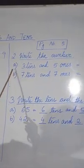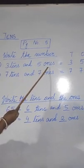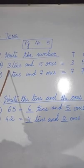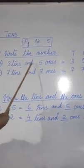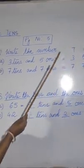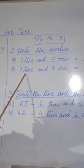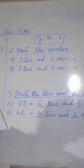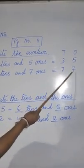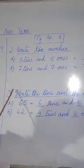Now look at question number a. 3 tens and 5 ones. 3 tens means 3 times 10 and 5 ones, which you can write as 35. Similarly, 7 tens, that means 7 times 10, and 7 ones, which is equal to 77. Same way you will complete the remaining ones.